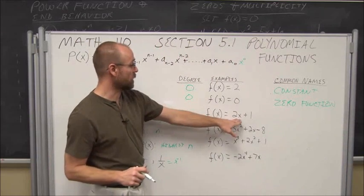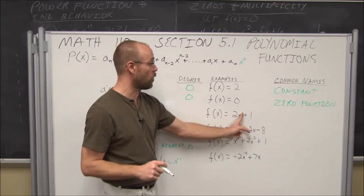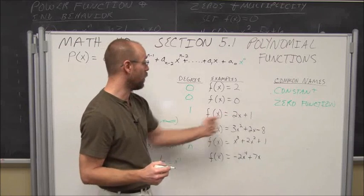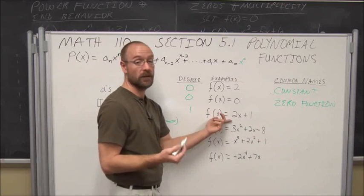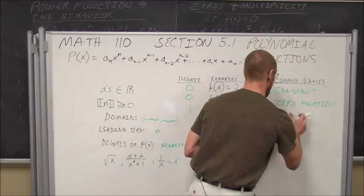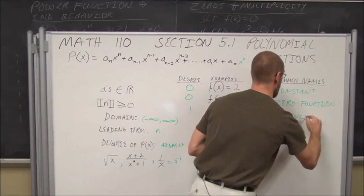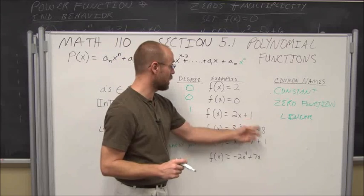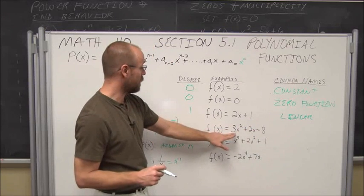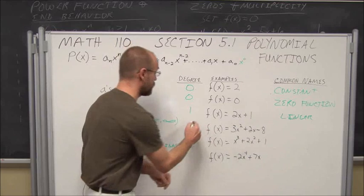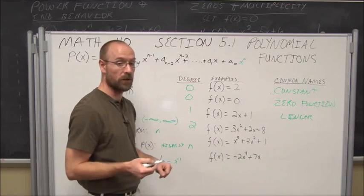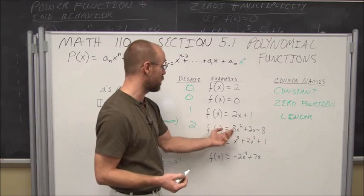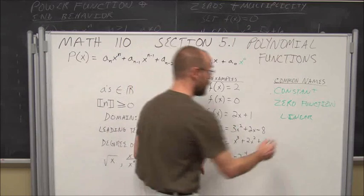Moving on: if we look at a polynomial with degree 1, such as x minus 1, the highest power of the leading coefficient is 1. We call this a linear equation — that's its common name. If the highest power is 2, it's a second degree polynomial. Second degree polynomials are quadratics, in the form ax squared plus bx plus c.